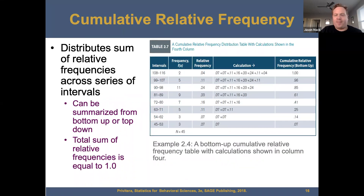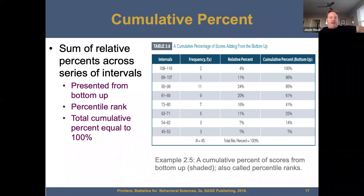Cumulative relative frequency distributes the sum of relative frequencies across the series of intervals. This can be summarized from the bottom up or the top down. The total sum of relative frequencies equals one. A bottom-up cumulative relative frequency table is shown in column four — the frequencies keep adding all the way up to the top, which equals one. Your cumulative percent is the sum of relative percents across the series of intervals presented from the bottom up — this is your percentile rank. Total cumulative percent equals 100%.